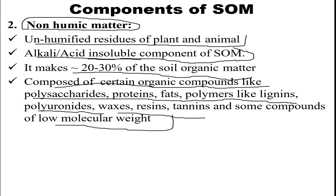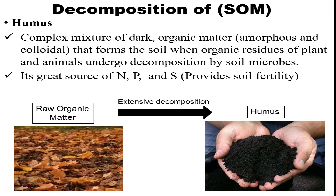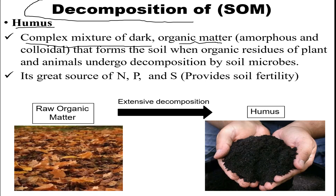These are the important components of soil organic matter. Regarding the decomposition of humus: humus is a complex mixture of dark organic matter that is amorphous and colloidal in nature, formed in soil when organic residues of plants and animals undergo decomposition by soil microbes. Humus is one component of SOM. We'll discuss more in the next video — stay tuned and thank you for watching.